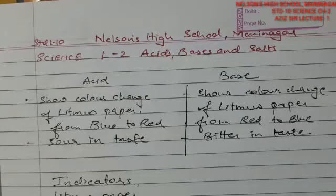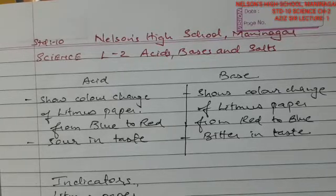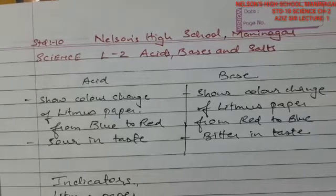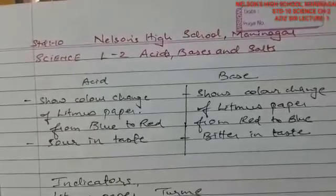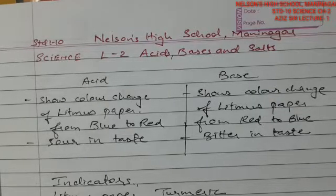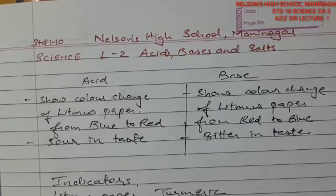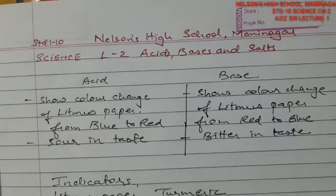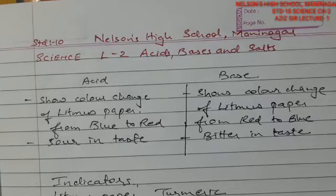Litmus paper shows a color change from red to blue in case of a base, and blue to red in case of an acid, so it is a natural indicator. Turmeric, that we use in everyday life, is also a natural indicator. You must have seen that turmeric in a gravy falls on your clothes and gives a yellow color, but when you wash it, it turns reddish-brown. The reason is it reacts with the base in soap, which is basic by nature, and the turmeric color changes to reddish-brown.